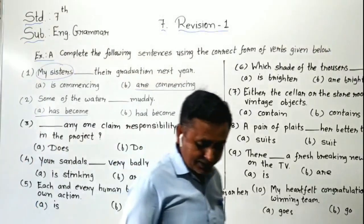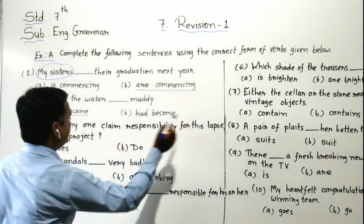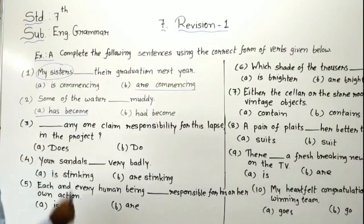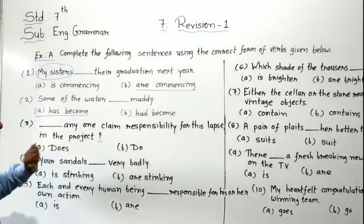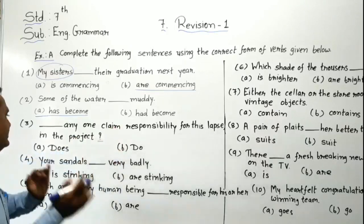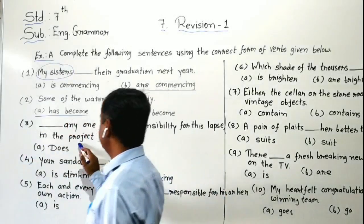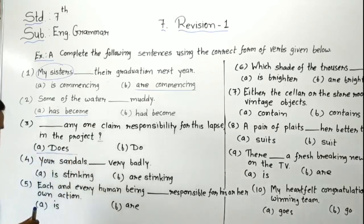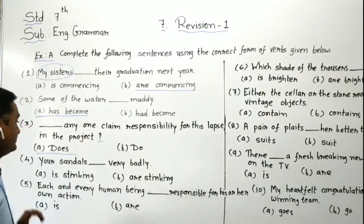Third blank: 'Does/Do anyone claim responsibility for these labs in the project?' Here, a question mark is given. Two words given are 'does' and 'do.' Anyone — we are talking about human beings, one person. With third person singular, we have to use 'does.' The answer becomes: Does anyone claim responsibility for this lab in the project?